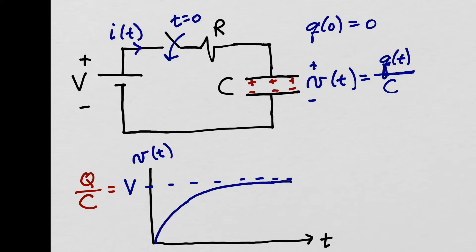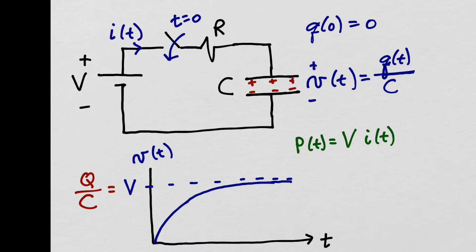While current is flowing, the power supply will be delivering power. Some of that power will go into heating the resistor and the rest will be stored on the capacitor. The power being delivered by the DC source is the product of the voltage of the DC source times the current that is flowing. Work is done in charging up a capacitor, and summing up all that work to go from a charge of zero to a charge of Q will tell us how much energy is stored on our capacitor.